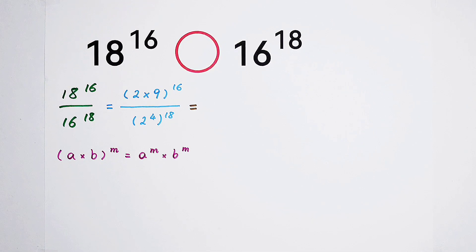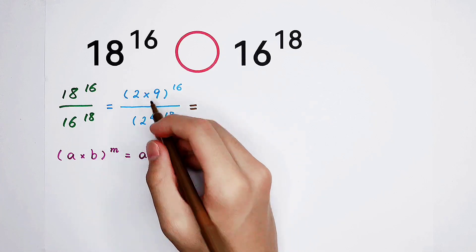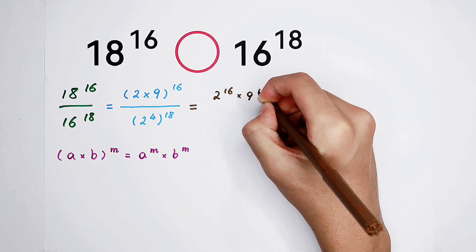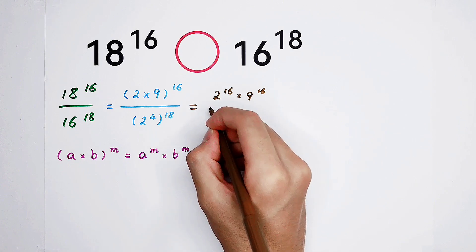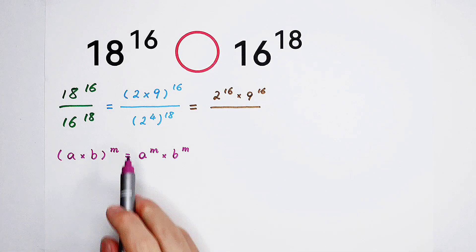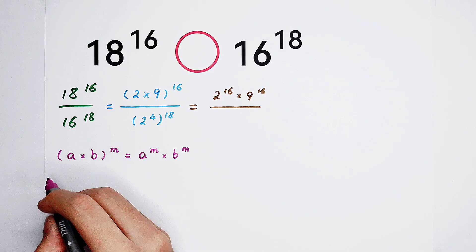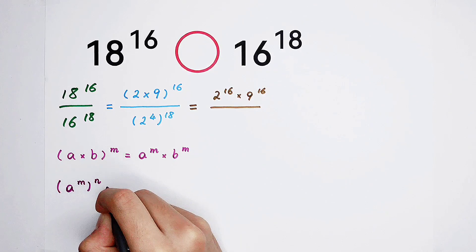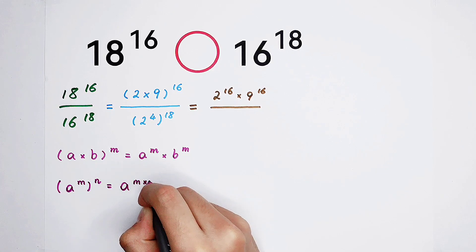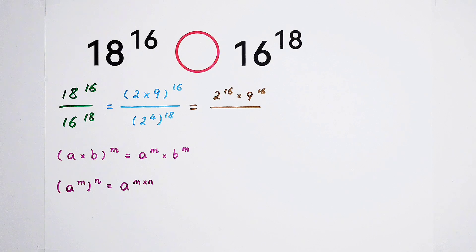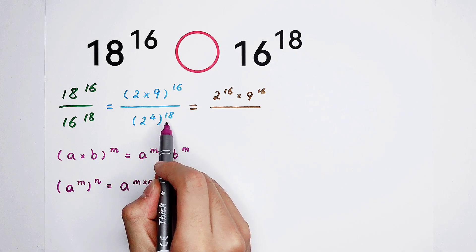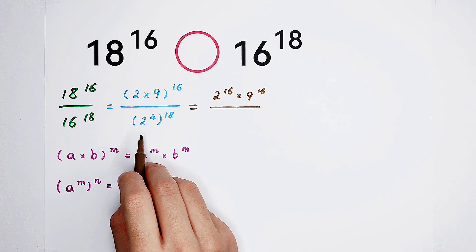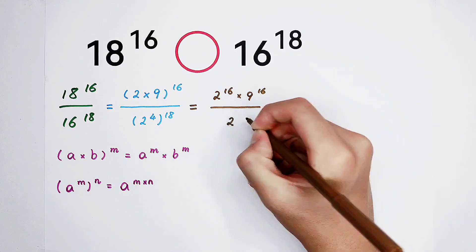Using this formula with A = 2, B = 9, and M = 16, the numerator can be written as 2 to the power of 16 times 9 to the power of 16. The denominator is 2 to the power of 4, all to the power of 18. Using the formula A to the power of M, all to the power of N, equals A to the power of M times N — the exponent is 4 times 18, which is 72. So the denominator is 2 to the power of 72.